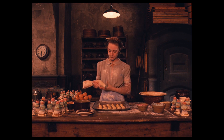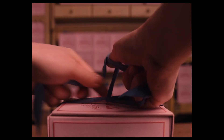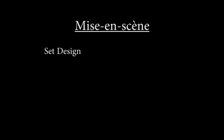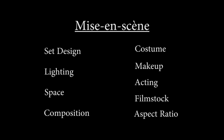To make sense of all of this on a cinematic level, we need to understand a fancy word called mise-en-scène, which is basically just everything in front of the camera. Elements like set design, lighting, space, composition, costume, makeup, acting, film stock, and aspect ratio are all parts of mise-en-scène. For this visual analysis, we are only going to focus on four of these.